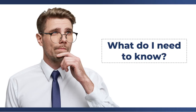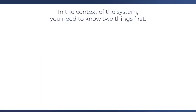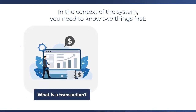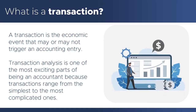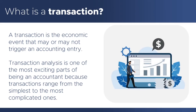So what do you need to know about this? In the context of the system, you need to know two things first: number one, what is a transaction, and number two, what is a journal entry. A transaction is the economic event that may or may not trigger an accounting entry. Transaction analysis is one of the most exciting parts of being an accountant because transactions range from the simplest to the most complicated ones.